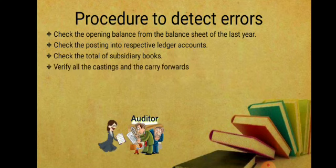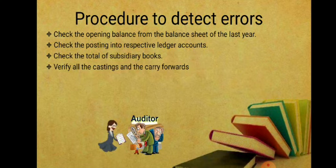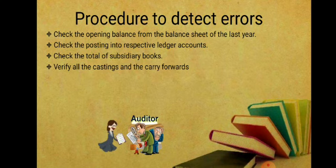The next step is to verify all castings and carry forwards. Castings means totalling in the journal — when one page ends, you carry forward the balance to the next page and total again. Similarly, carry forward means when we close ledger accounts, the closing balance is carried forward to the trial balance. The auditor must check these totals and carry forwards for any errors.